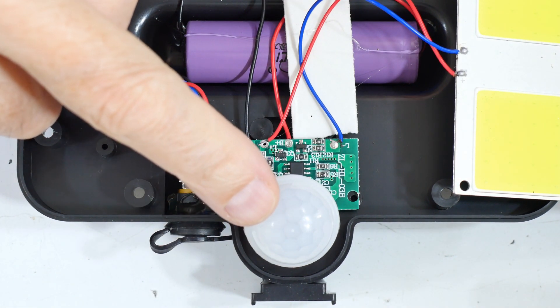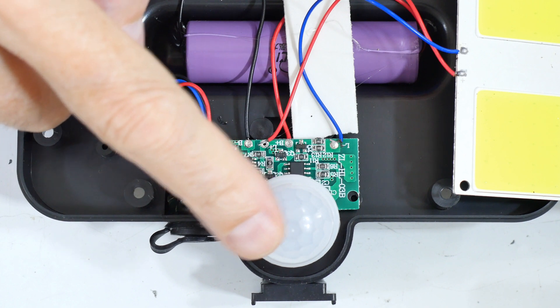This is the PIR sensor. This is the thing that detects whether someone's moving in the area.